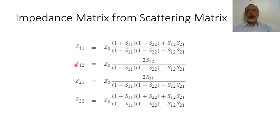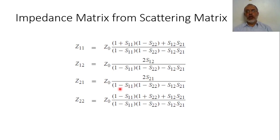Z12 in terms of the scattering matrix can be obtained as Z0 multiplied by 2S12 over the denominator. Z21 in terms of the scattering matrix elements is Z0 multiplied by 2S21 over the denominator. And finally, Z22 is Z0 multiplied by (1 − S11)(1 + S22) + S12·S21, all over the denominator. This is how to obtain the impedance matrix from the scattering matrix.